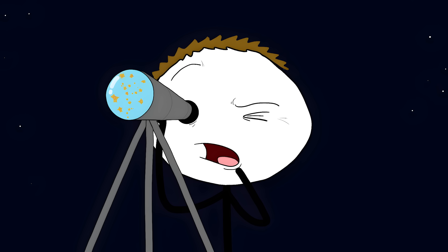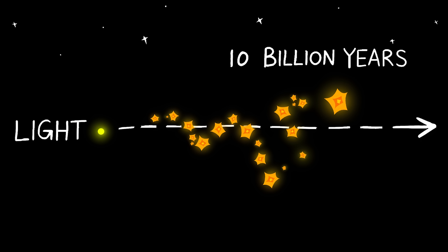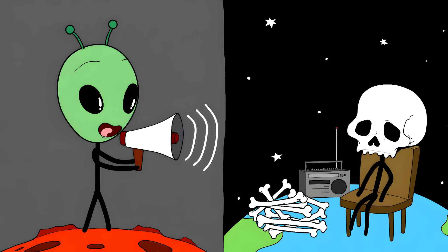This wall is so big that light takes 10 billion years to cross it. That means if aliens on one end of the wall sent a message to aliens on the other end, they'd have to wait 10 billion years for a reply.